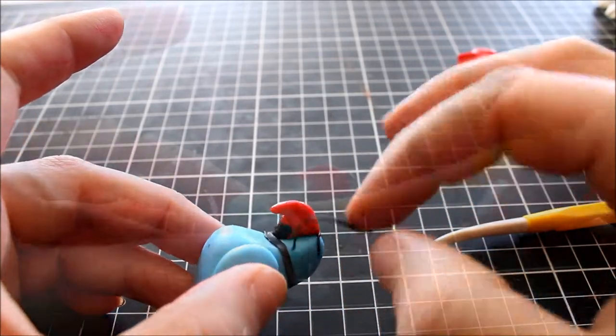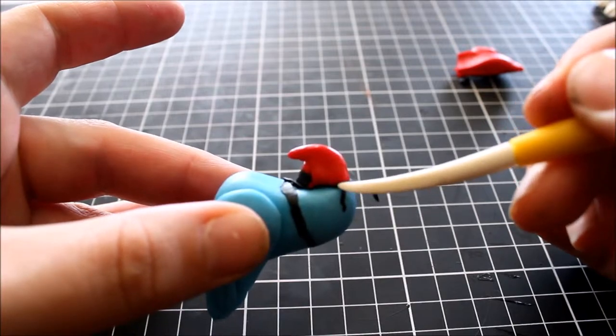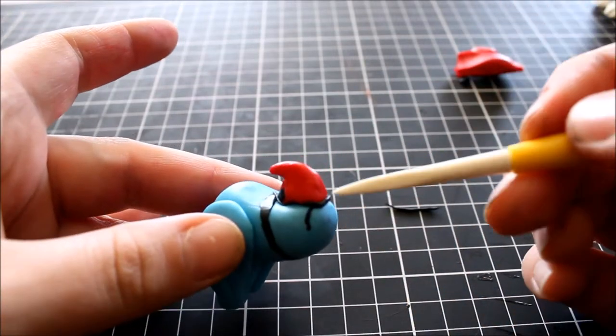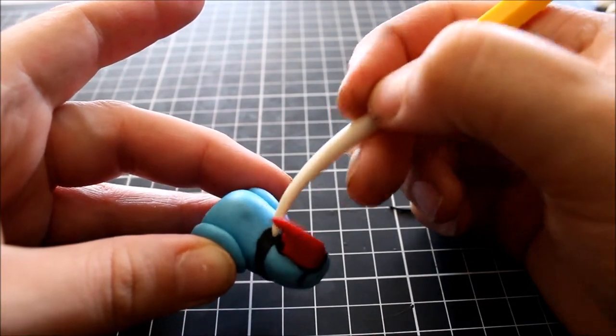I'm rolling out another thin snake of black and outlining the beak, as the ringnecks do tend to have a darker feather just running around their beak, and just combining that in with the bottom half with my little tool.